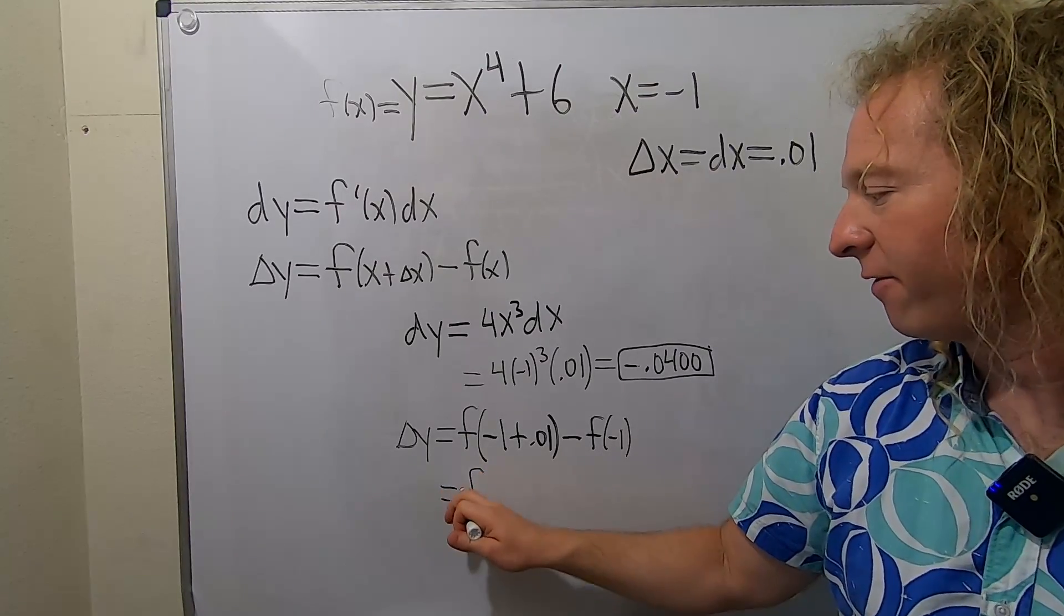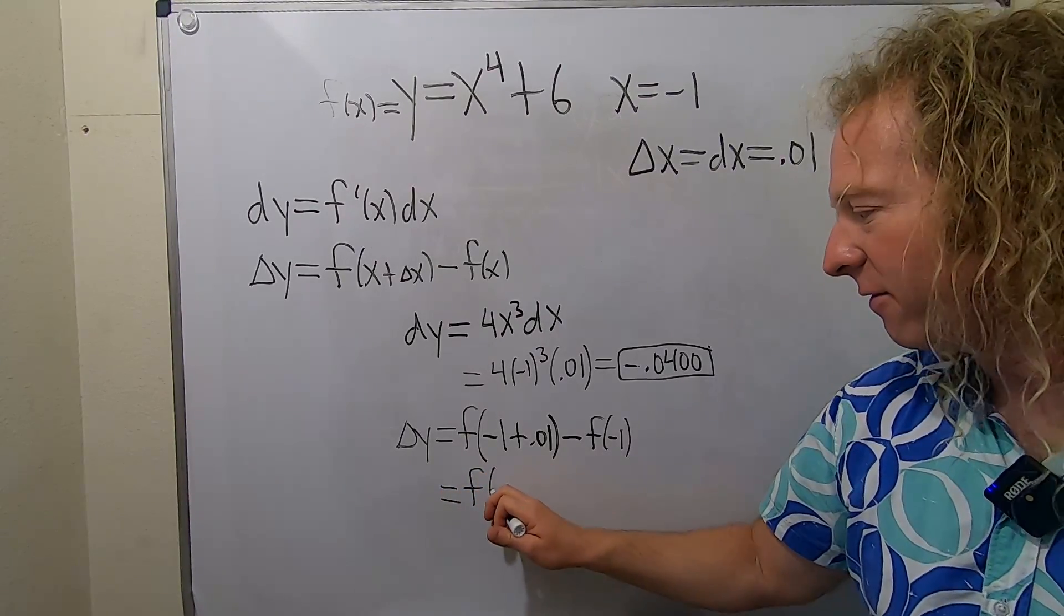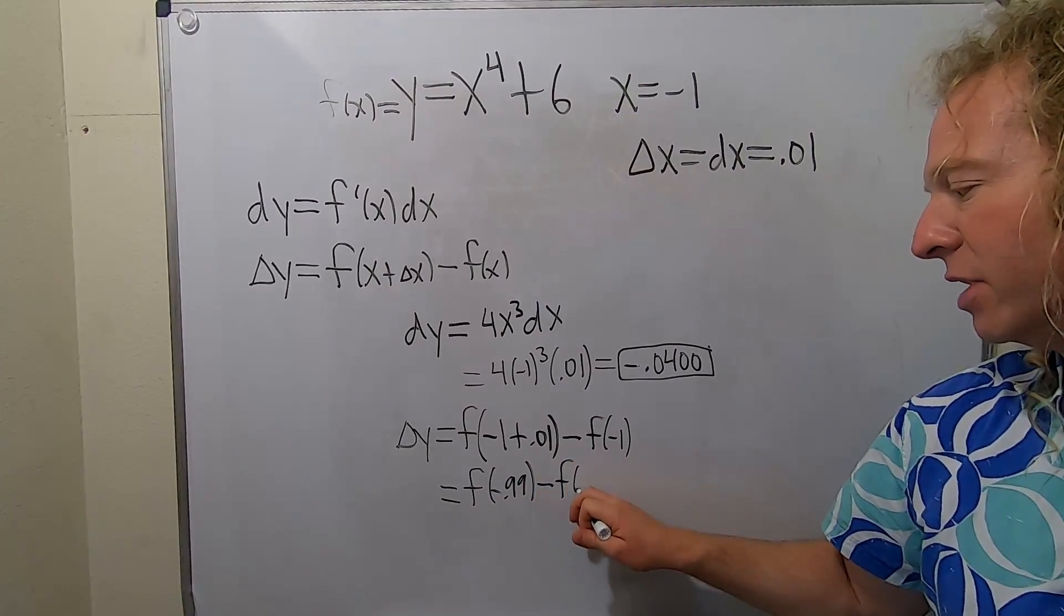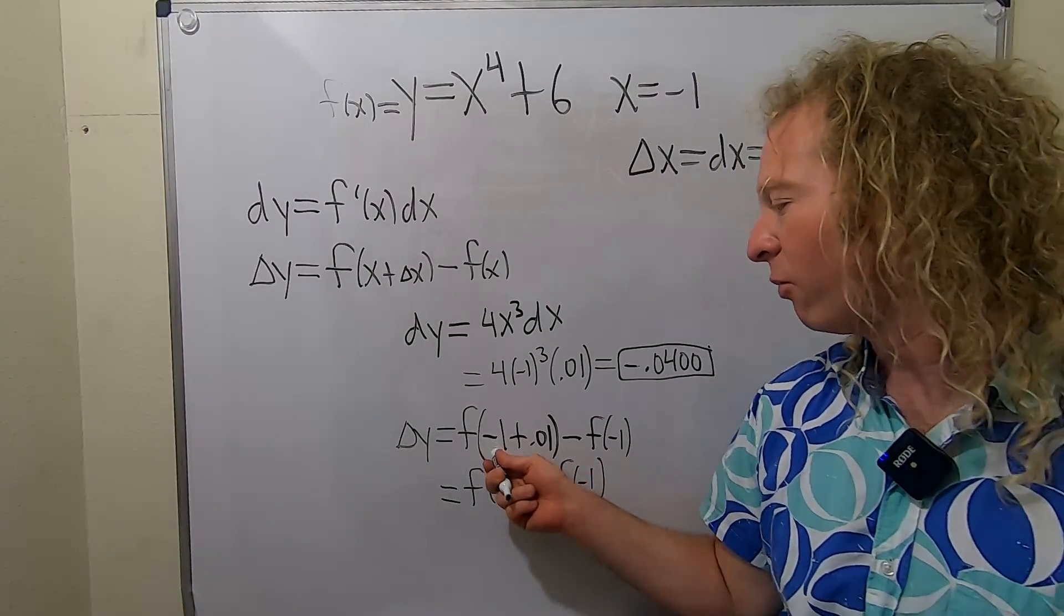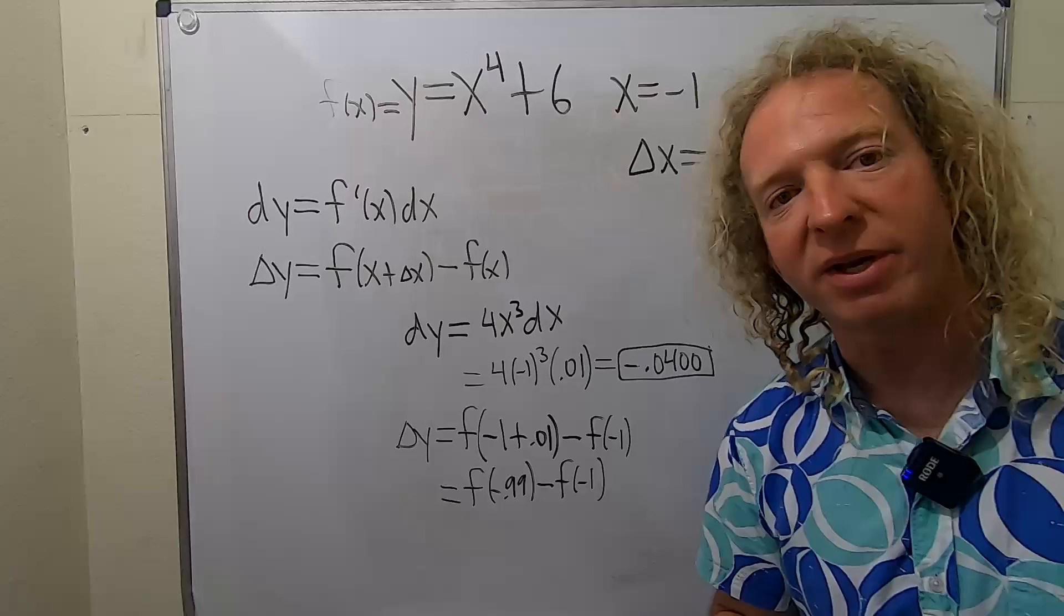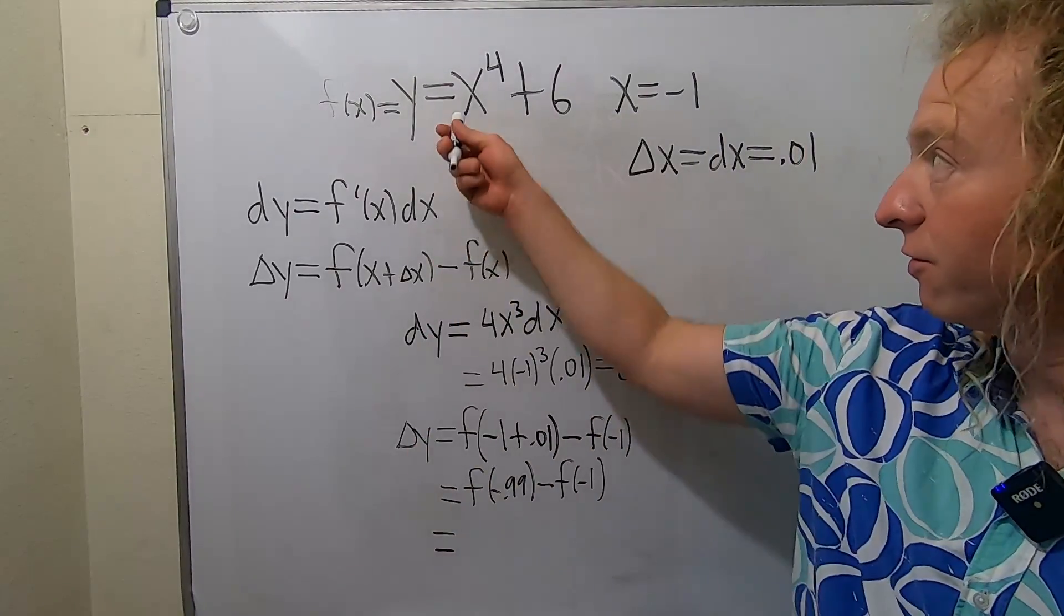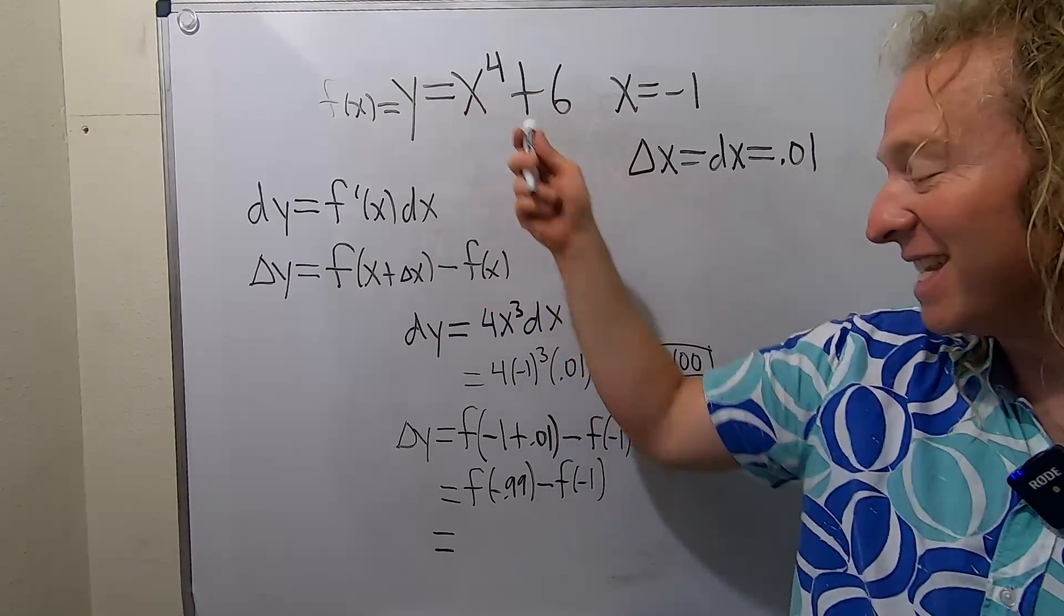This equals f of negative 0.99 minus f of negative 1. Negative 1 plus 0.01 is negative 0.99. Now we use our function formula.